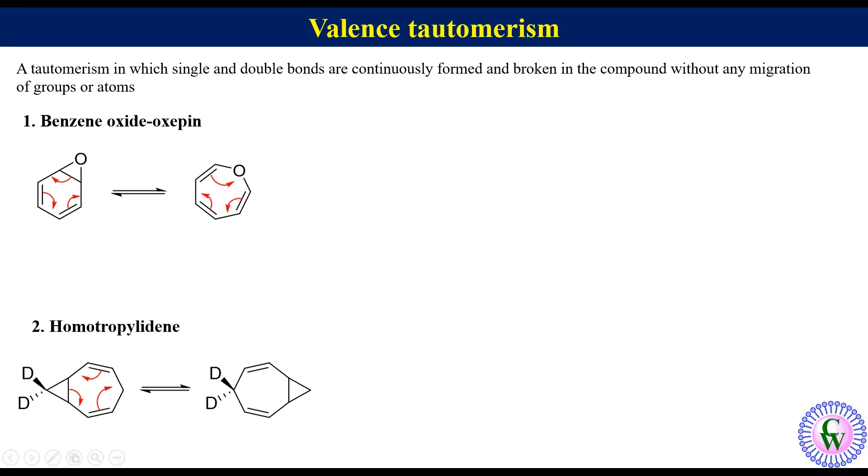The third and more interesting example is bullvalene. This is the structure of bullvalene. For better understanding, label all the carbon atoms as 1, 2, 3, 4, 5, 6, 7, 8, 9, 10. Here we can see that carbons 4, 5, and 10 are part of the cyclopropane ring.